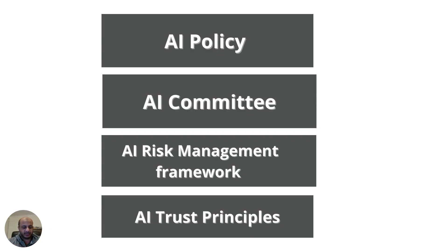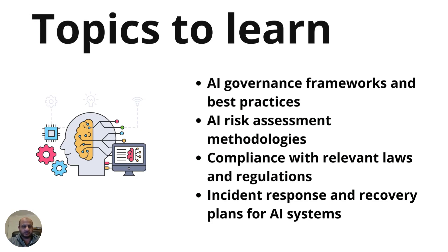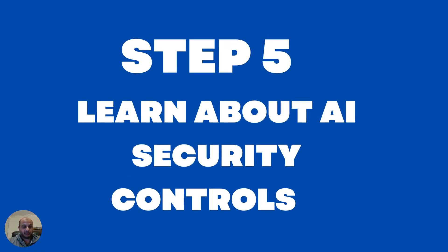Step four: learn about AI governance and risk management. AI security risks don't exist in a vacuum — you need a proper governance framework, including an AI policy, an AI committee, a risk management framework, and AI trust principles. AI frameworks are different because you must think about fairness and transparency. There are many governance frameworks available — Singapore has a strong one. Key topics include AI governance best practices, AI risk assessment methodologies, compliance with laws like the upcoming EU AI Act (similar to GDPR but AI-specific), the new ISO standard for AI, and incident response and recovery plans for AI systems.